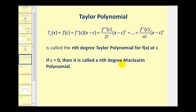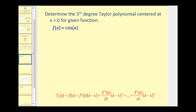Let's take a look at a couple of examples. For this problem, we want to determine the fifth degree Taylor polynomial centered at x equals zero for the given function. We could call this a Maclaurin polynomial since it is centered at x equals zero. To find the degree five Taylor polynomial, we will have to go out to the fifth derivative of the given function, and then divide by five factorial.